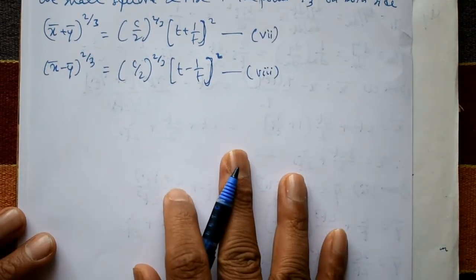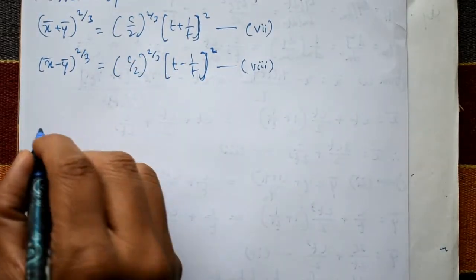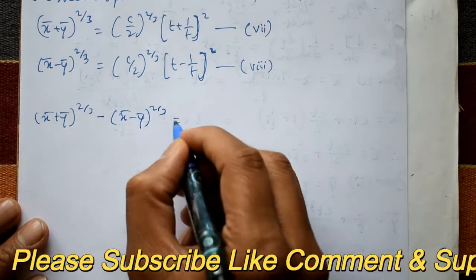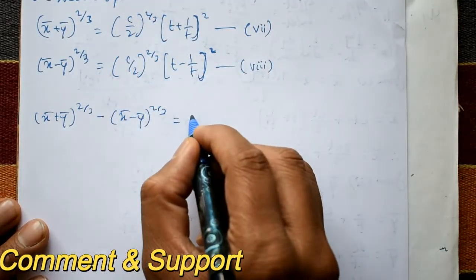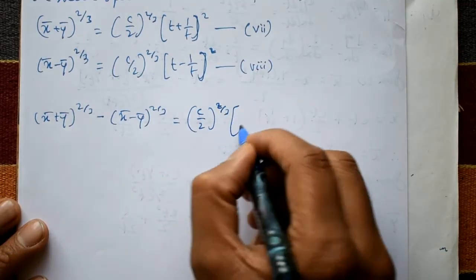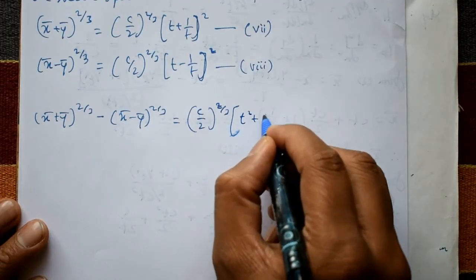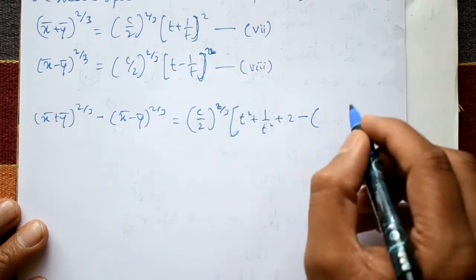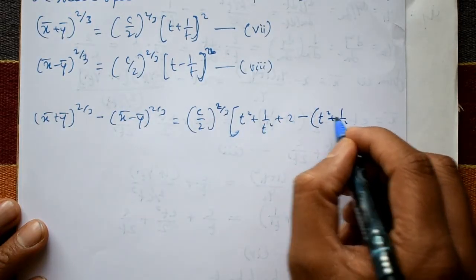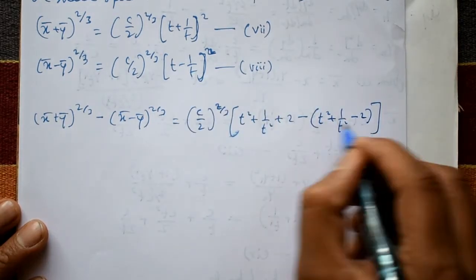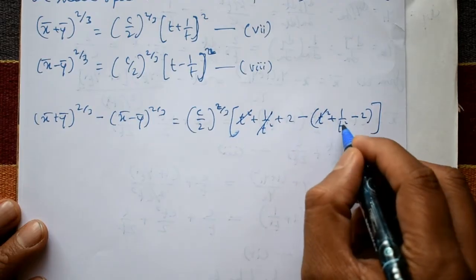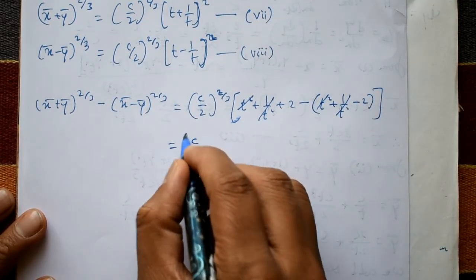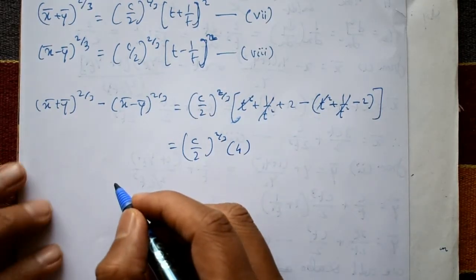Now subtract equations seven and eight: (x-bar plus y-bar) raised to 2 by 3 minus (x-bar minus y-bar) raised to 2 by 3. The right-hand side uses the (a plus b) squared minus (a minus b) squared identity. After expansion, t squared and 1 by t squared cancel; only 2 plus 2 equals 4 remains. So the result equals (c by 2) raised to 2 by 3 times 4.